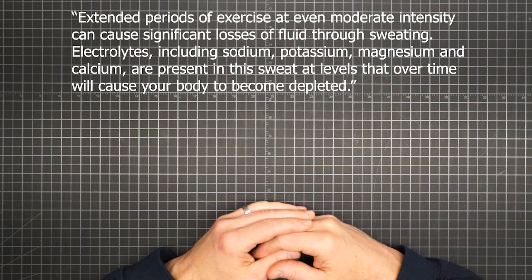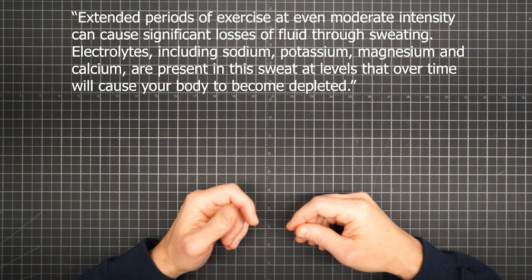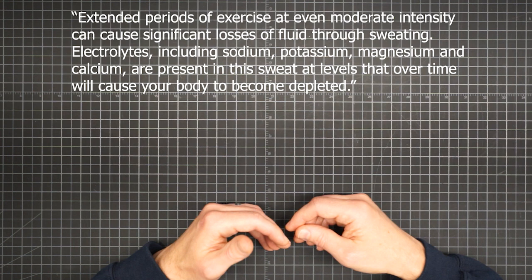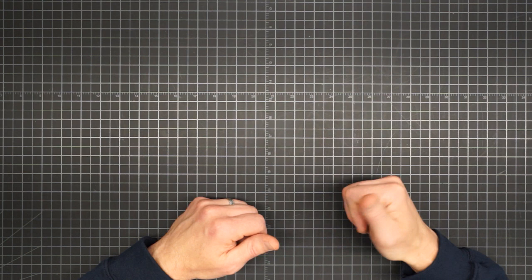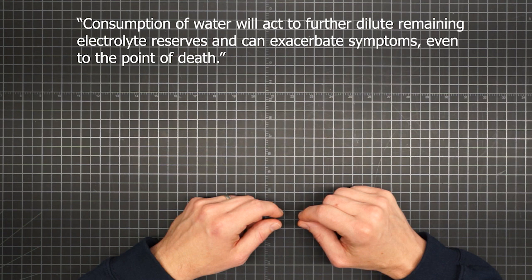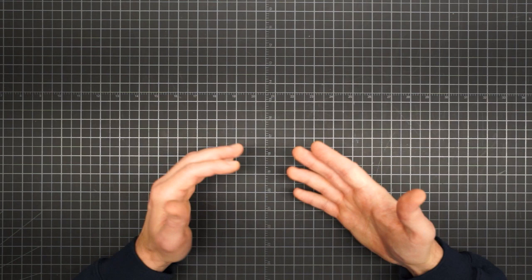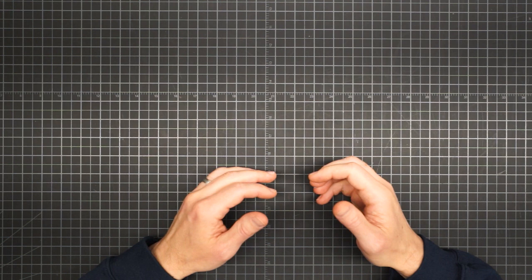In summary, extended periods of exercise at even moderate intensity can cause significant losses of fluid through sweating. Electrolytes, including sodium, potassium, magnesium, and calcium are present in this sweat at levels that over time will cause your body to become depleted. You must drink to avoid dangerous levels of dehydration, but consumption of water will act to further dilute remaining electrolyte reserves and can exacerbate symptoms, even to the point of death. So the only solution is to drink while supplementing with electrolytes. Alright, so apart from all the grim reaper stuff of severe cases, what are the performance issues involved in more routine levels of electrolyte depletion?